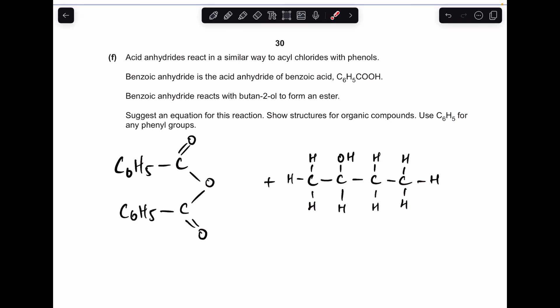Finishing off with part F, there's benzoic anhydride. They said we could use C6H5 for the phenyl group. There's my butan-2-ol. Basically what's going to happen in here, one of these C single bond O's will break and we're going to generate an ester and we're also going to generate benzoic acid. There's your products there, it's obviously the ester and there's your benzoic acid.